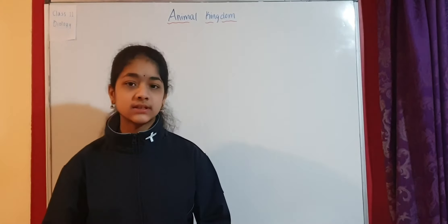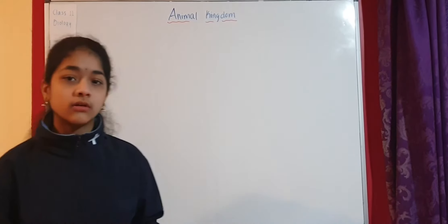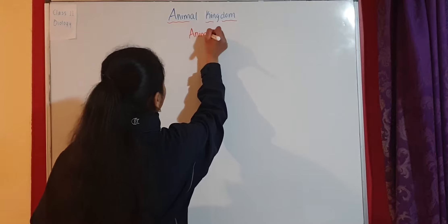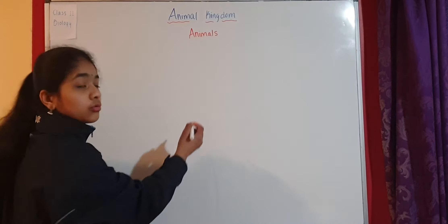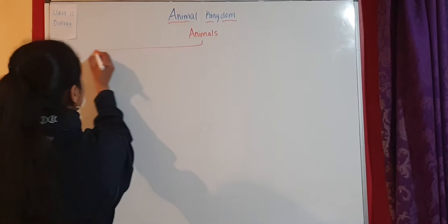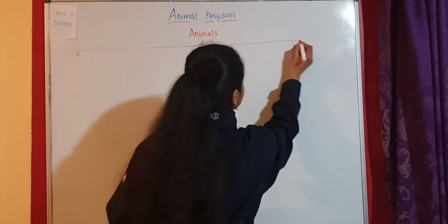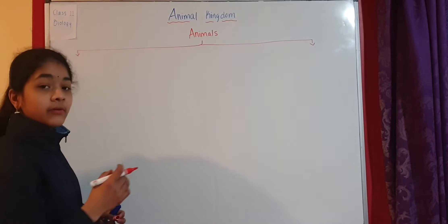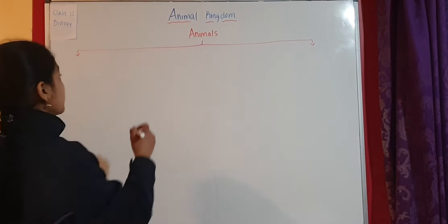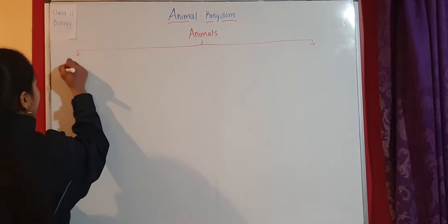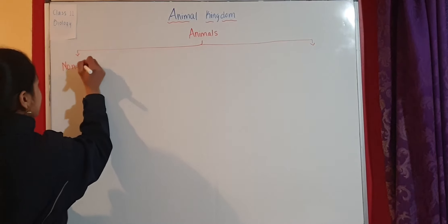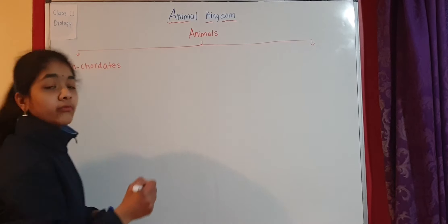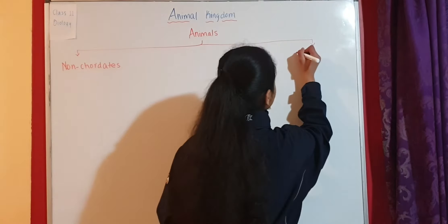In this video, we are going to discuss the classification of Kingdom Animalia. Animals are classified into two groups on the basis of the presence and absence of notochord. If notochord is absent, they are called non-chordates. If notochord is present, they are called chordates.